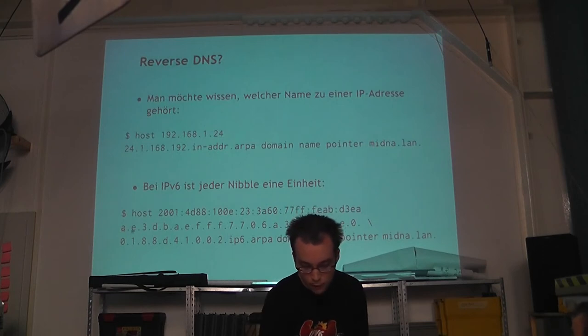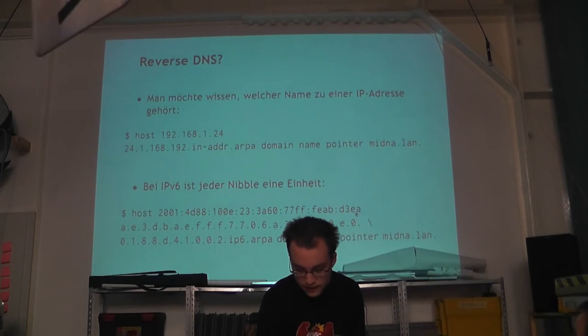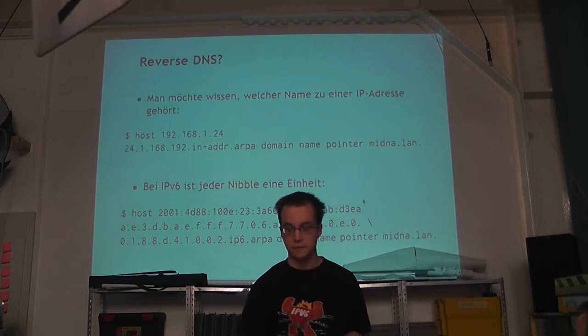A nibble is simply a hex digit. So it becomes a.e.3 and so on. And if you read from the back here, you see a, e, 3, d, and so on.